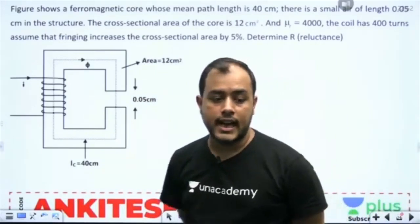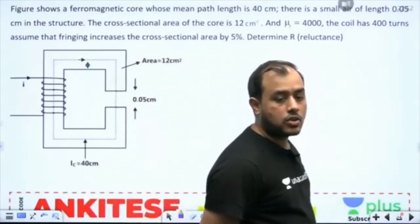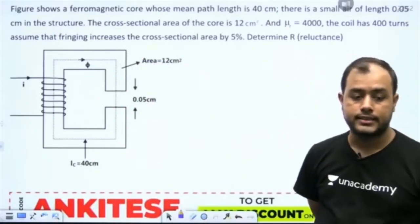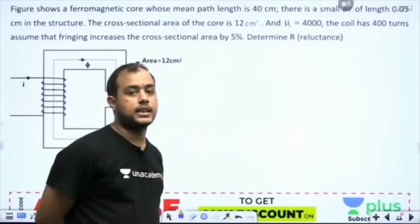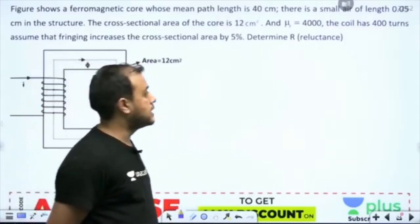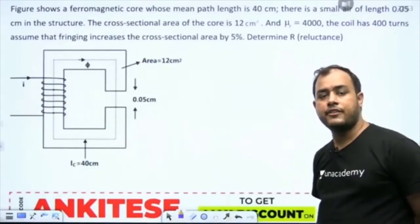The cross-sectional area is 12 cm square, mu r is 4000, coil has 400 turns. Now if the fringing increases the area by 5%, determine reluctance. Now try this, everybody.